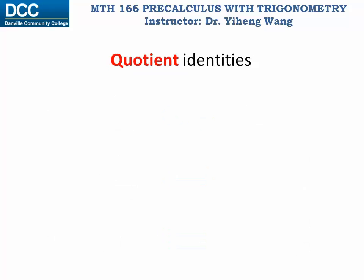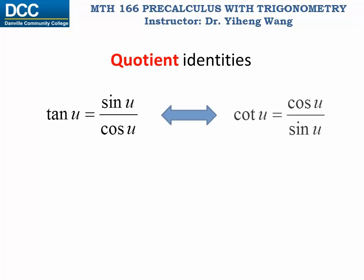We learned about the quotient identities when we first defined tangent function as the quotient of sine and cosine. Therefore tangent u equals sine u over cosine u. And since cotangent is the reciprocal of tangent function, cotangent is the quotient of cosine and sine functions.